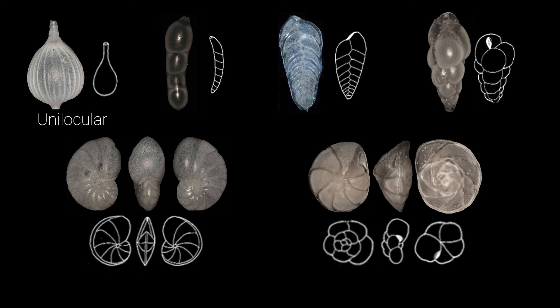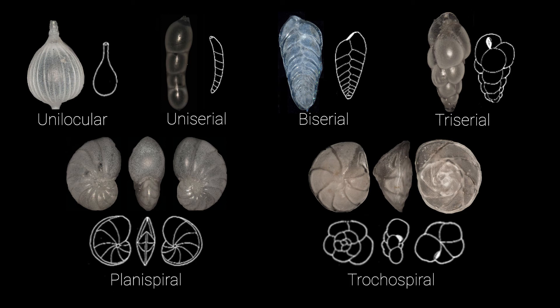Unilocular foraminifera have only one chamber. Others add chambers in a single row or column and are called uniserial. Biserial foraminifera have two rows of chambers added on either side of a central axis. Triserial foraminifera have three rows of chambers, which sometimes appear to twist around each other as the chambers get larger over time. Some foraminifera coil in two dimensions, creating an expanding spiral outward from the initial chamber — these are called planaspiral. If the coiling is offset in a third dimension, coiling outward and upward at the same time, this creates a cone shape and is called a trochospiral chamber arrangement. Some foraminifera even combine these arrangements, transitioning from triserial to biserial over the lifespan of an individual, or adding chambers along two rows like a biserial while also coiling.